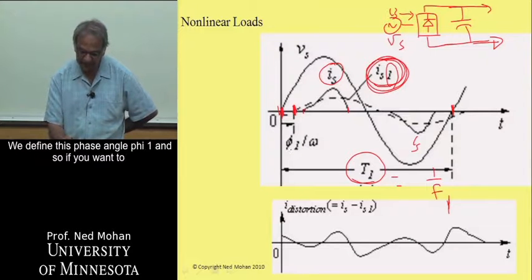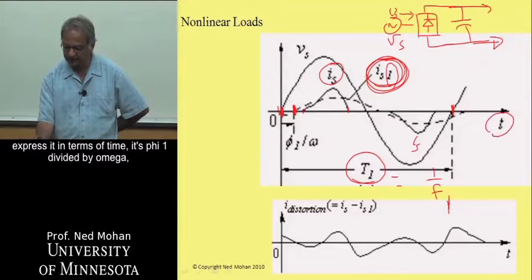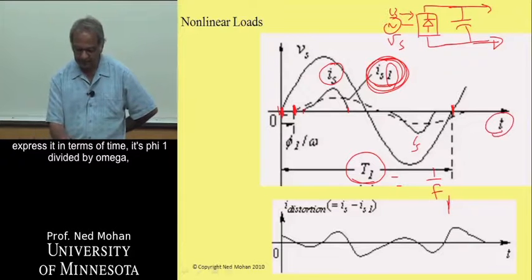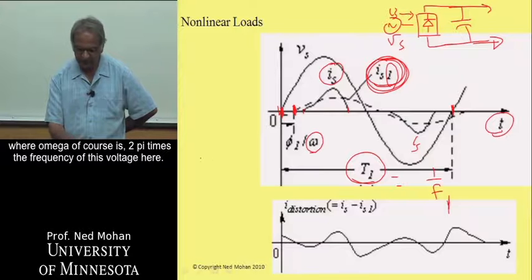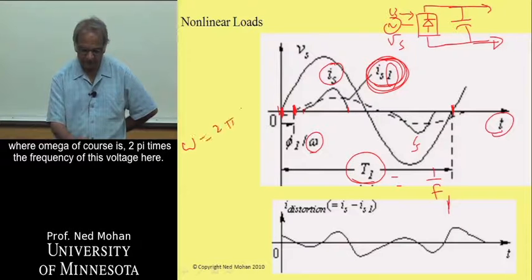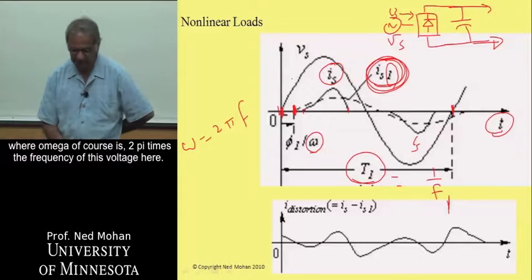So with respect to the zero crossing of the voltage and zero crossing of IS1, we define this phase angle phi1. And if you want to express it in terms of time, it's phi1 divided by omega, where omega, of course, is 2π times the frequency of this voltage here.